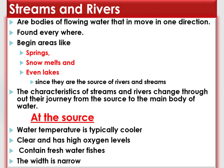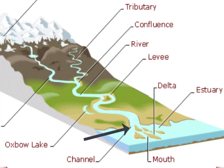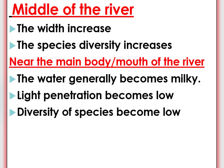Rivers and streams mostly contain freshwater fishes. The width is narrow at the beginning or at the source. At the middle of the river, the width and species diversity becomes high. Near the main body or mouth of the river, the water generally becomes milky since it gathers a high amount of mineral substances throughout its journey. Light penetration and diversity of species becomes low near the mouth because of the milky appearance of the water due to high accumulation of mineral substances gathered through the water's journey.